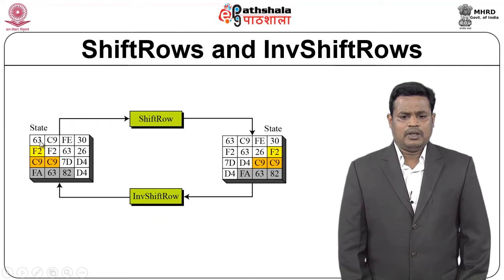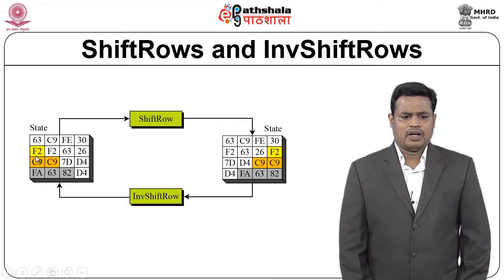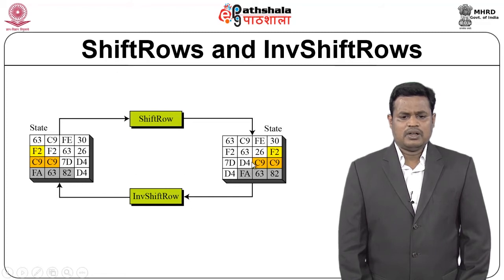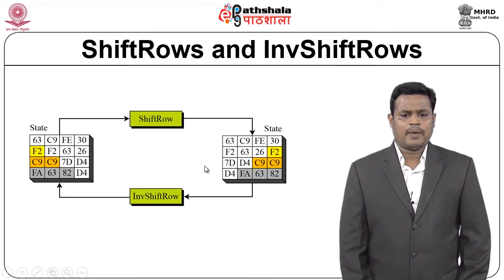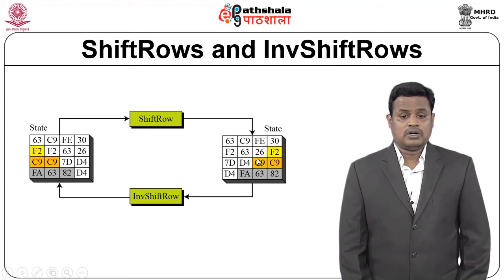With an example: values 63, C9, FE, 30 remain the same in the output state for row one. In the second row, F2 comes to the first position, then C9 to the second position. Similarly FA, 63 and 83D4 come to their positions. This is what happens with Shift Row. For the inverse: no right shift, one right shift, two right shifts, three right shifts — to get back the original state.